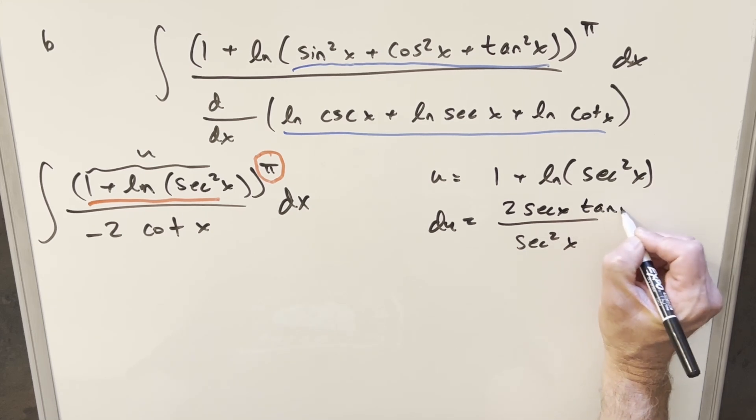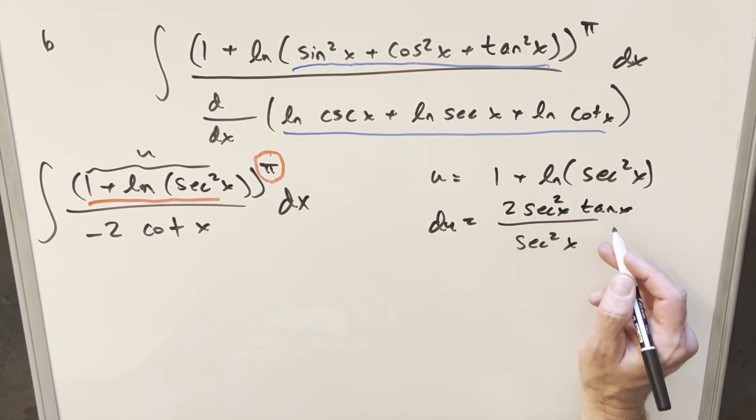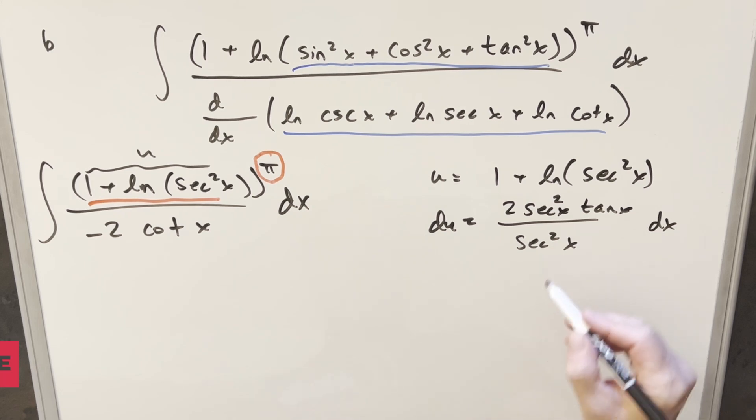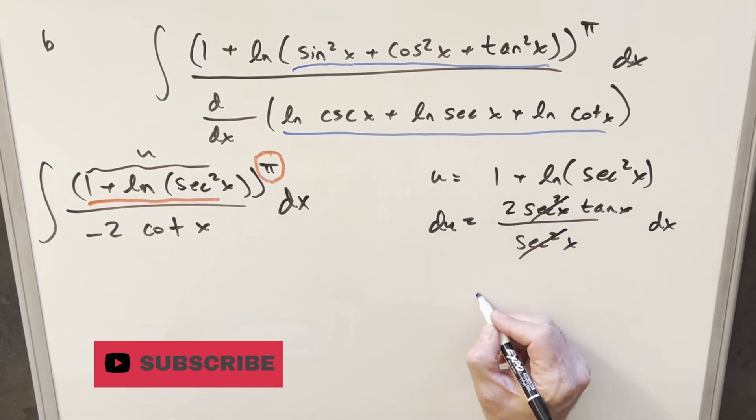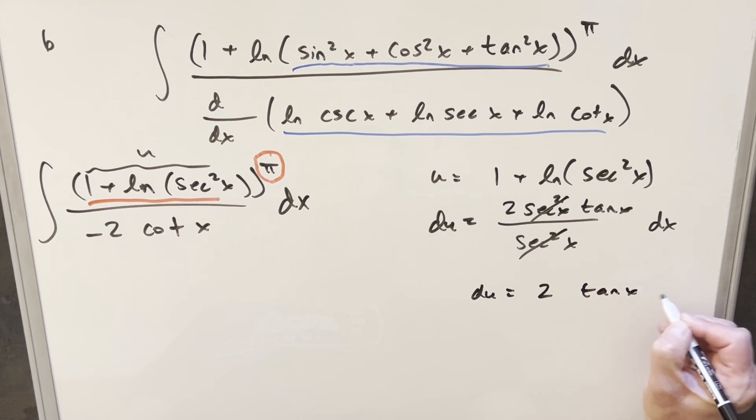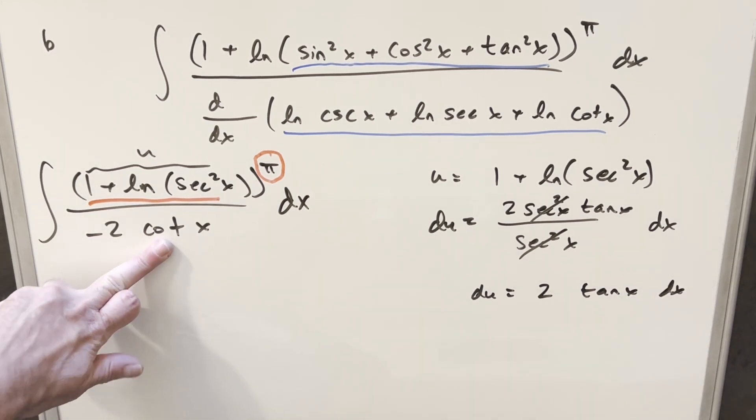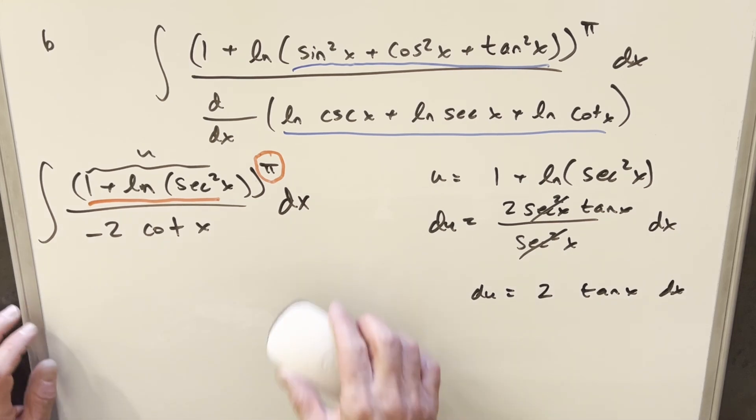What I can do is combine the secants and write this as secant squared times tan x. But then I can cancel the secants here, and then for our du value, we just end up with 2 tan x dx. But the interesting thing about that is we've got cotangent right here. The reciprocal of cotangent is going to be tan x. So let me just make a little space right here.